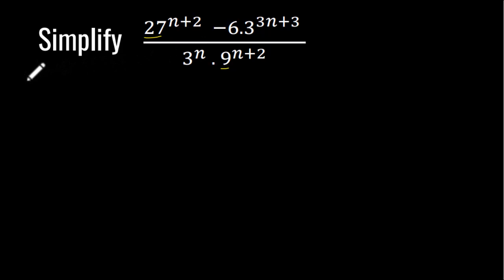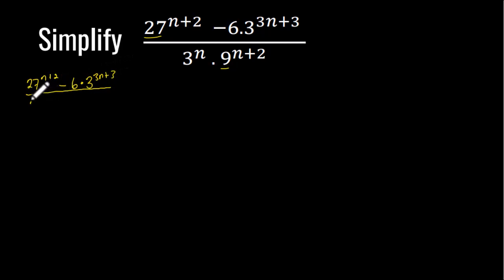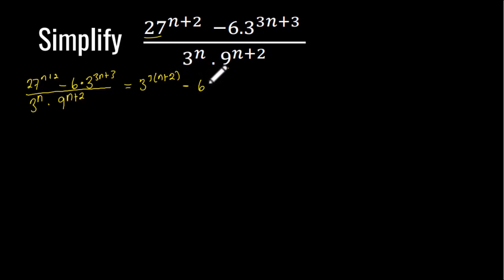I'm going to rewrite the question, which is 27 exponent (n+2) minus 6 times 3 exponent (3n+3), all divided by 3 exponent n times 9 exponent (n+2). Now, 27 can be written as 3 exponent 3, multiplied by the exponent (n+2), minus 6 times 3 exponent (3n+3), divided by 3 exponent n times 9.